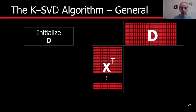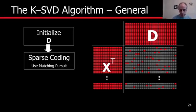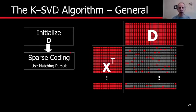Now the next step is we do sparse coding with that dictionary — we already know how to do that. We go to every signal and solve a sparse coding problem. This gives the code for the first signal, the code for the second signal, and so on. Red means active — it's part of the active set and a non-zero coefficient. So we do the sparse coding for each one of them.